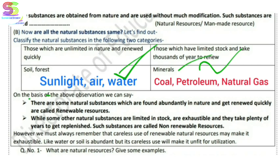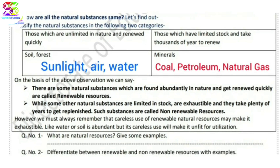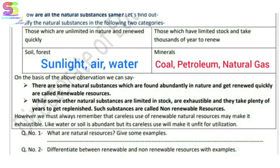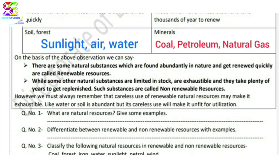On the basis of the above observations, we can say: Number one — there are some natural substances which are found in nature and get renewed quickly; these are called renewable resources.